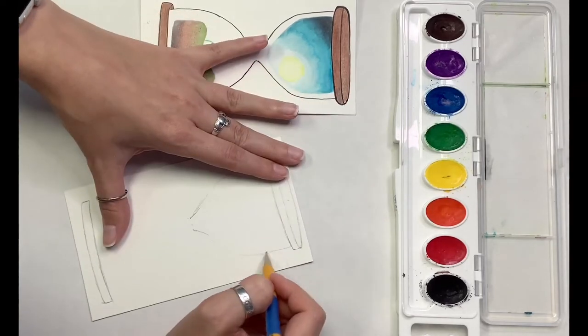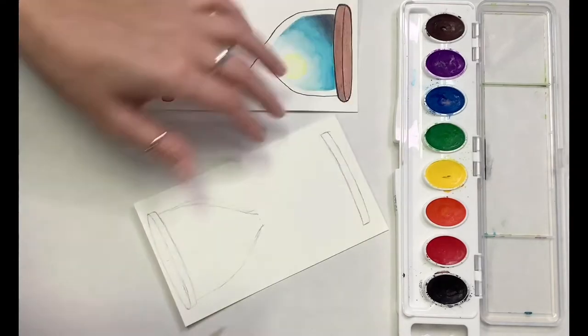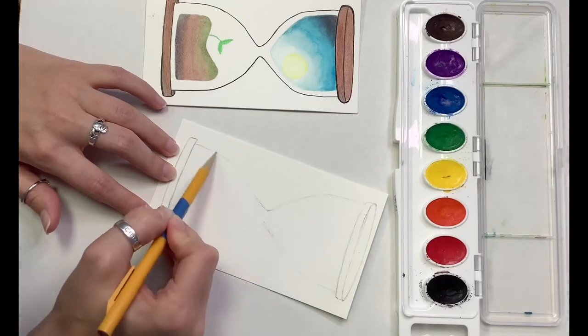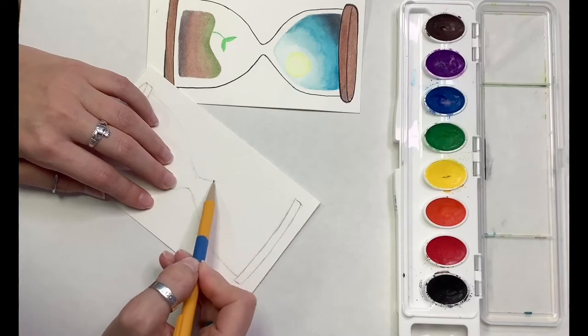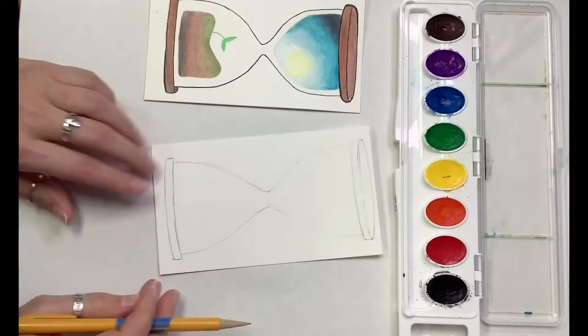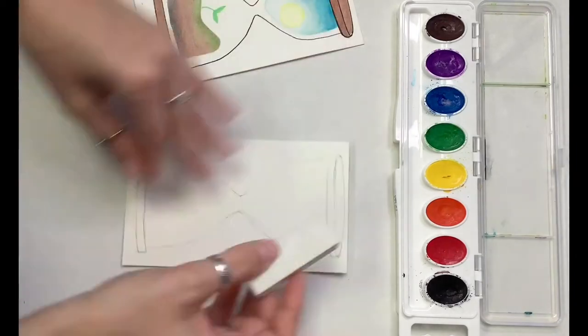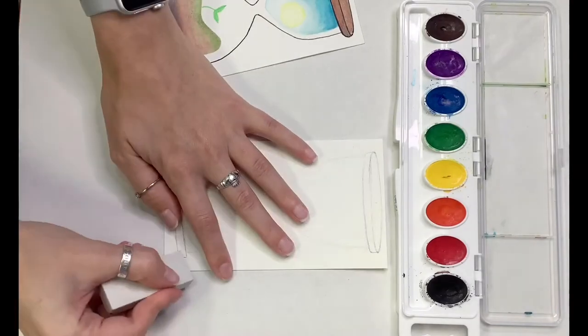I also want to remind you to draw very gently so that the pencil doesn't show through our paint later and erase any mistakes you make very gently so that we don't damage the surface of the paper. Once I have the general shape of my hourglass finished I go back over it with an eraser and make the lines a lot lighter because this is going to be the glass in the hourglass and it's not going to have a hard outline.